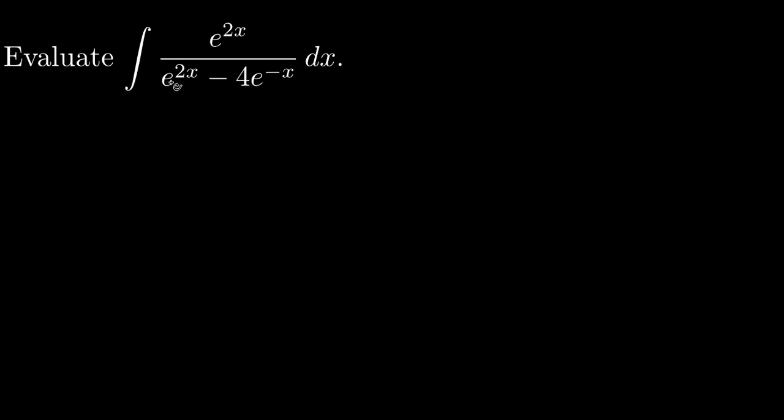If u equals e to the 2x minus 4e to the minus x, well its derivative would be by the chain rule 2e to the 2x plus 4e to the minus x, and we just don't have that in the numerator.